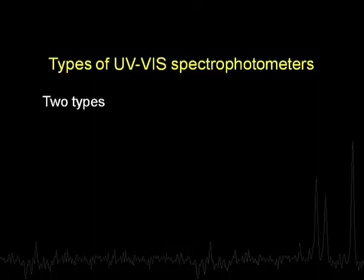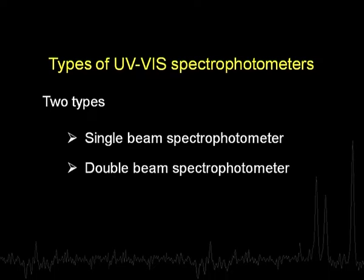When we use a spectrophotometer there are two types available. One is called a single beam spectrophotometer and the second is a double beam spectrophotometer. Let us look at these two devices.